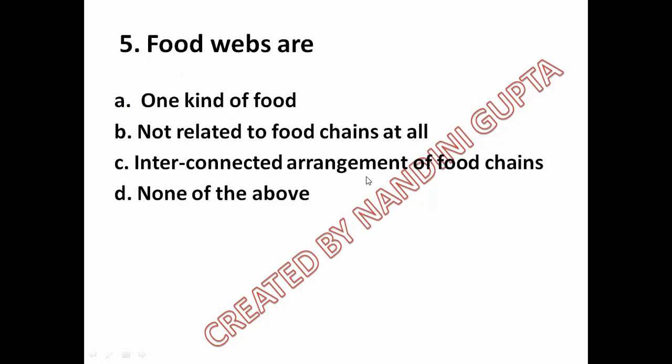Next: food webs are option A one kind of food, option B not related to food chains at all, option C interconnected arrangement of food chains, option D none of these. Food webs are an interconnected arrangement of food chains, so option C is correct.